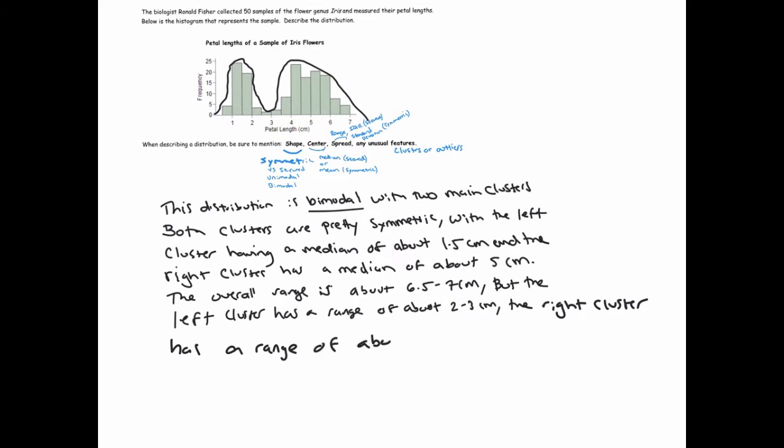At this point, I've talked about the shape by indicating it's bimodal. I've talked about the two clusters separately, which is recommended if you have two clusters. I've talked about the shapes of each, their centers using the medians, and the spread by indicating the ranges. Whenever you have a distribution where there's two clusters or that's bimodal, that usually suggests that you looked at a sample that really represents two distinct groups. The two clusters is unusual - this is what I mean by unusual features.